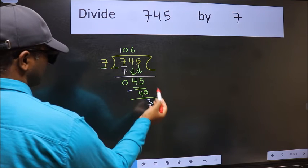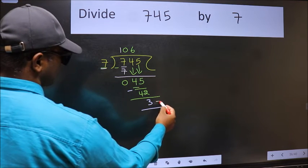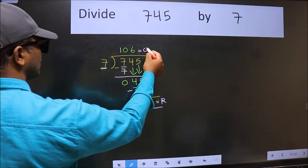No more numbers to bring down, so we stop here. This is our remainder and this is our quotient.